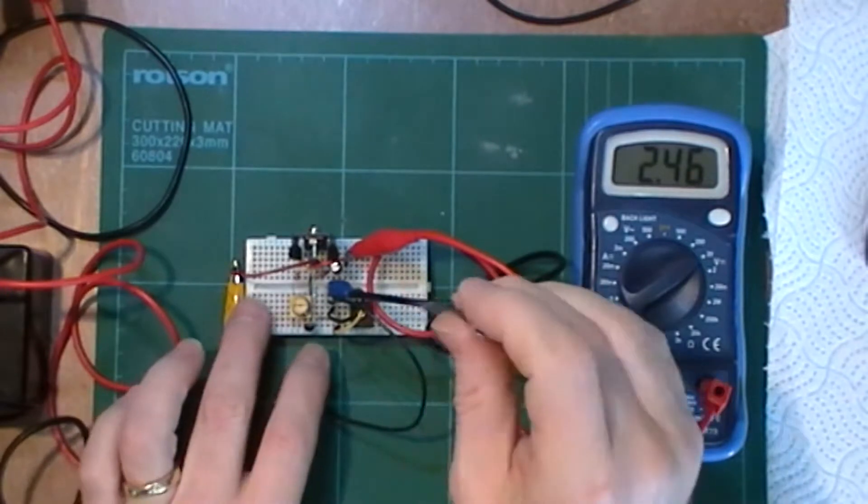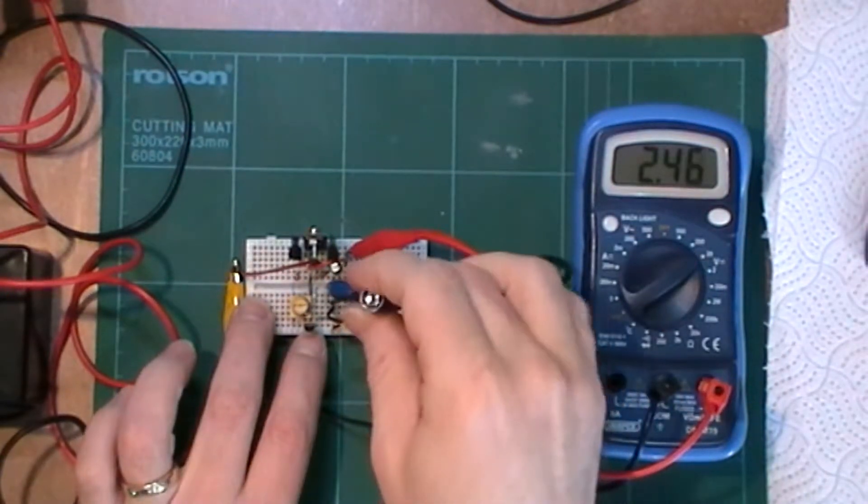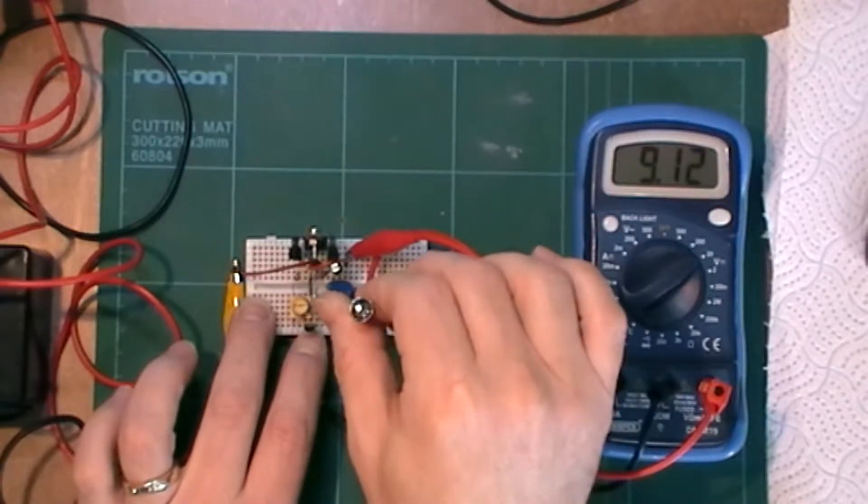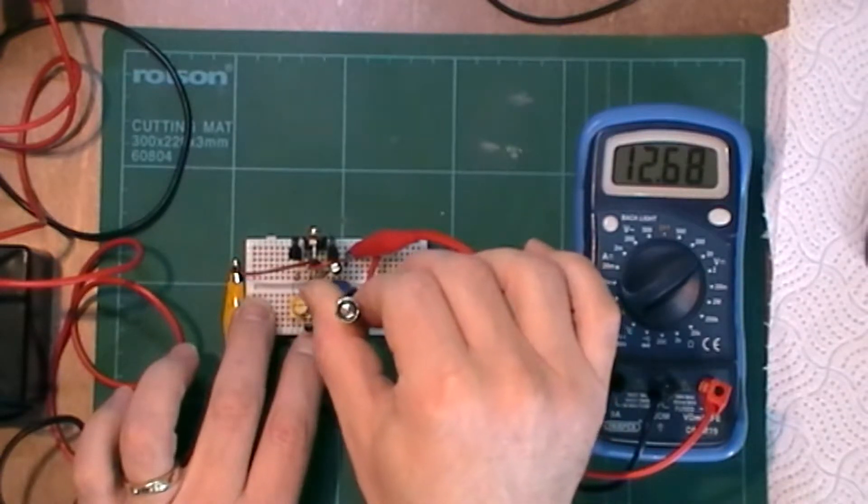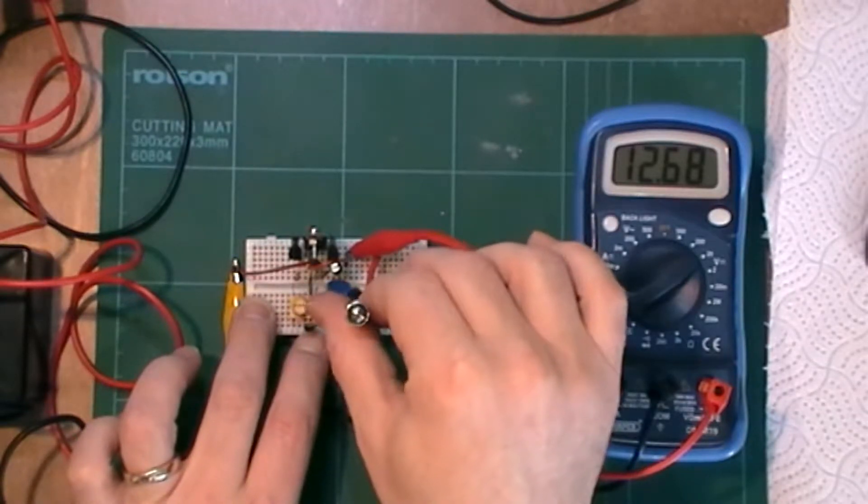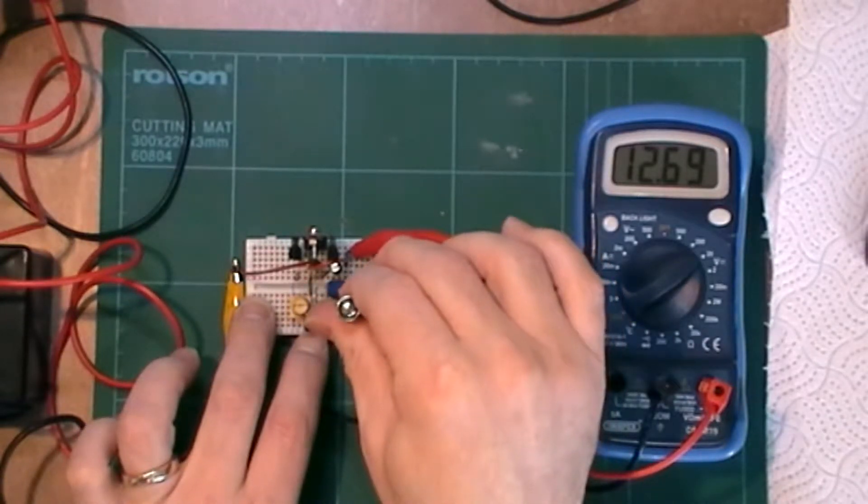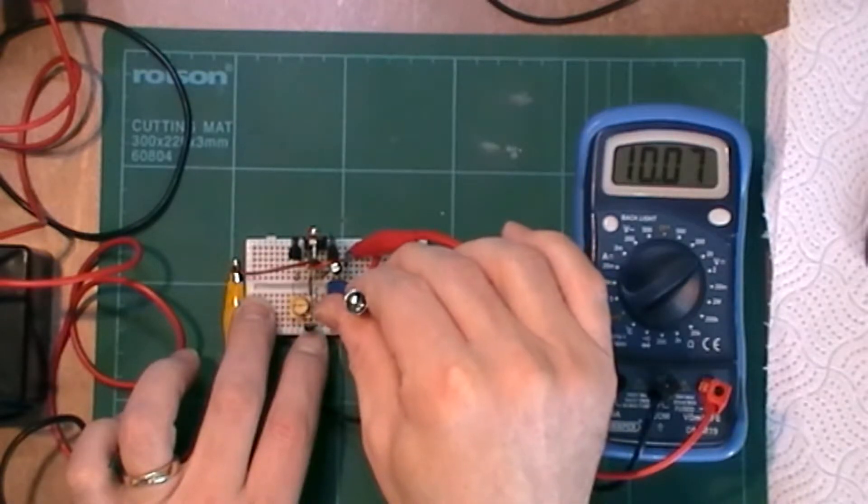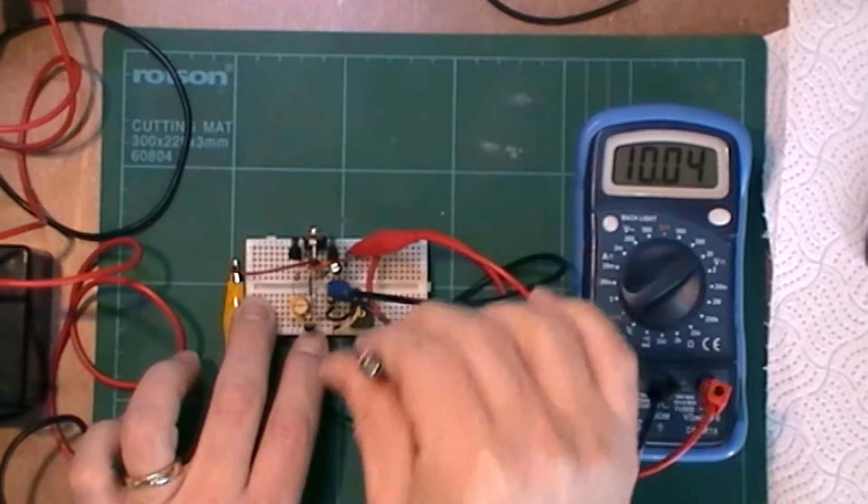So let's adjust that trim pot and get up the voltage. So my output voltage goes up. I've got 14 volts on the power supply so 12.5, 12.68 on the output. I can trim that down to whatever we want. Let's put it on 10 volts close enough.